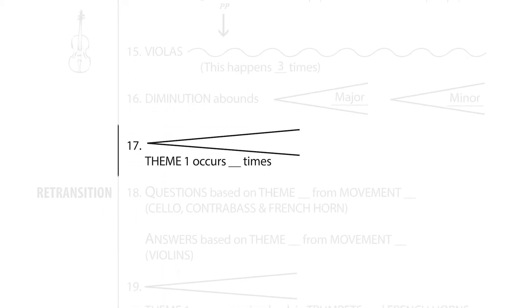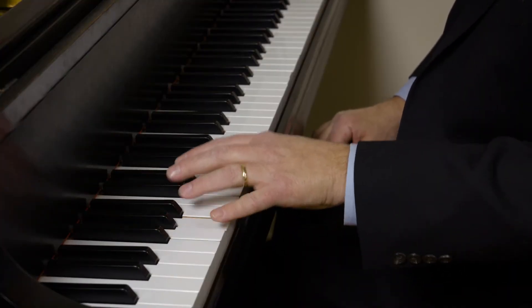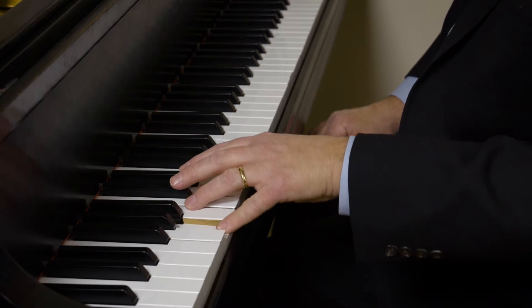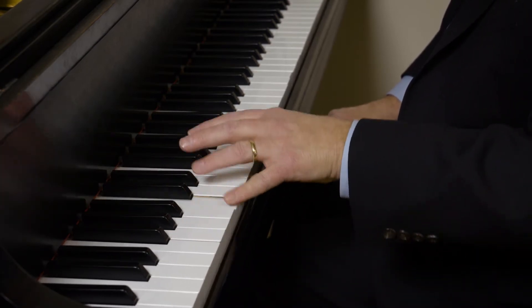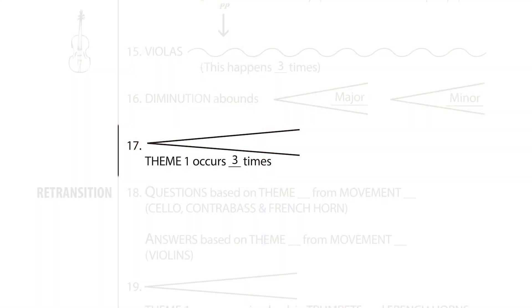At number 17, we find that Theme 1 of the Fourth Movement now occurs down in the bass range of the orchestral sound. Count how many times it occurs at number 17. The answer is three. And did you notice that it's another three-step ascending sequence? Listen to the orchestra again.